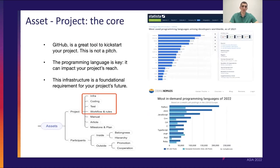When it comes to your assets that you should consider and ensure are strong and solid in order to succeed in your cooperation opportunities with enterprises, you have your infrastructure, your code, your testing environment, and your workflow and rules. Generally, most projects use GitHub for this — it's a great tool to kickstart your project.